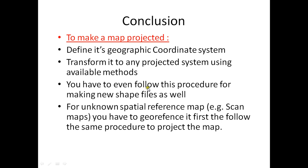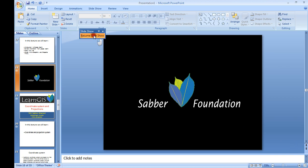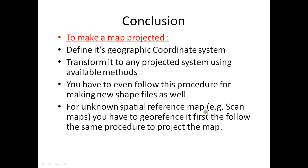You must follow this procedure even when making a new shapefile — first define the coordinate system, then transform it. For a map with unknown spatial reference, such as a scanned or analog map, you must georeference it first by defining at least four points with their latitude and longitude, then project it. From this lecture, we have learned about the geographic coordinate system and how to project it.